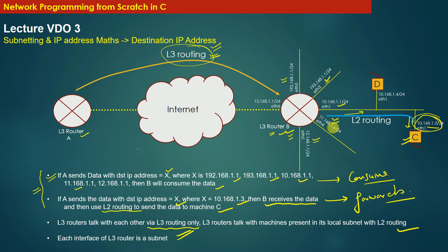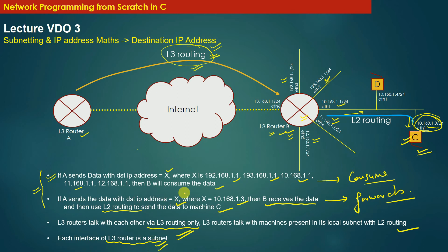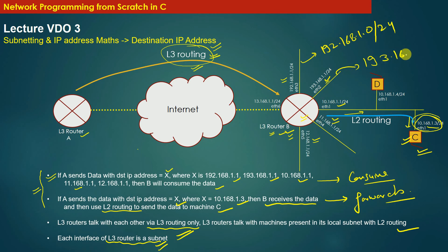The journey of the packet is divided into two phases. In the first phase, L3 routing is used and the packet eventually reaches the destination gateway. In the second phase, the destination gateway router uses L2 routing to deliver the packet to the destination machine. Also note that each interface of an L3 router represents a subnet — for example, this interface represents subnet 192.168.1.0/24, and this interface represents subnet 193.168.1.0/24, and so on.